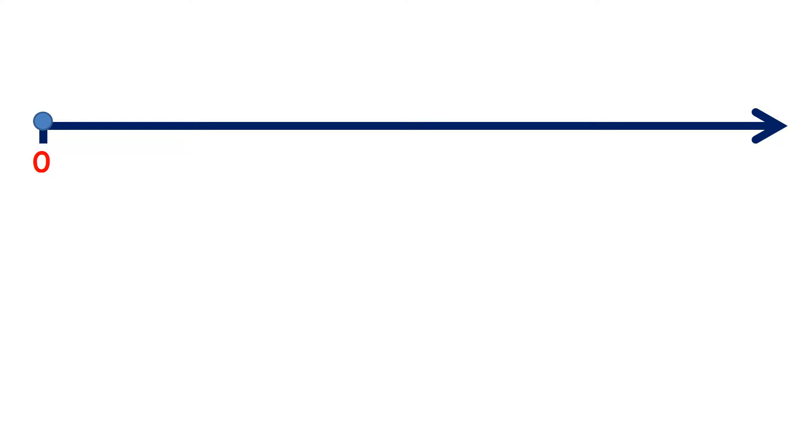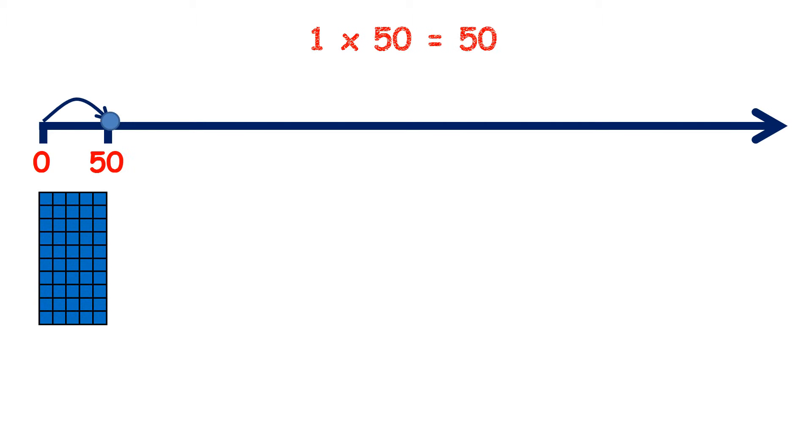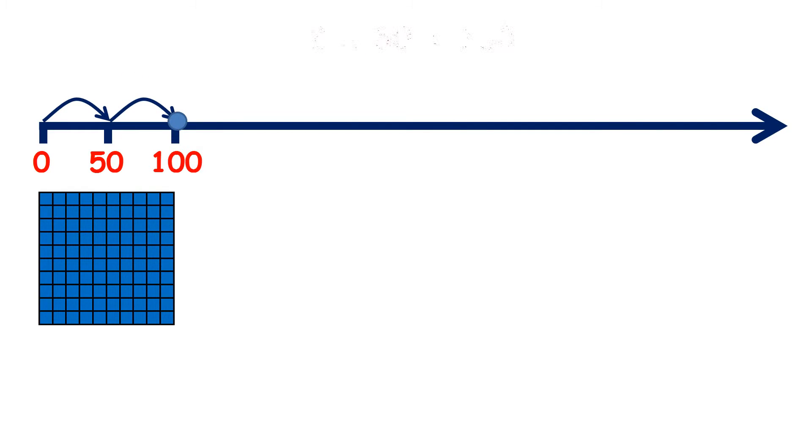Let's learn our 50 times table. 0 times 50 is 0. 1 times 50 is 50. 2 times 50 is 100.